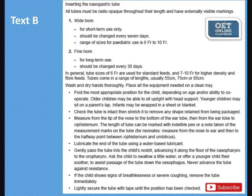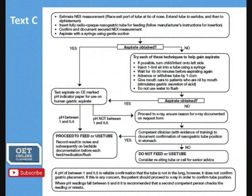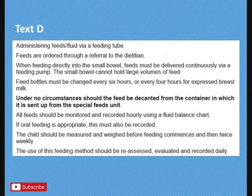Now prepare to read Text C. This is Text C. We can see that in this text we have a flowchart which contains a step-by-step process for the use of nasogastric tube. Now you have another 30 seconds to skim through the content. And now we have Text D, which is about administering feeds and fluids via feeding tube. Now you have 30 seconds before we look at questions.